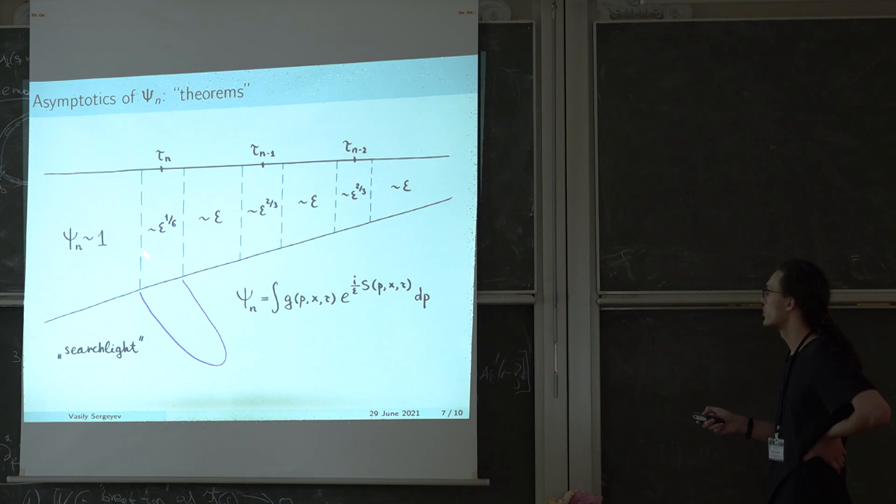Nearby the critical moment tau n, this solution becomes of the order of epsilon to the power one-sixth. And afterwards, it becomes even smaller of the order of epsilon. And from time to time, namely in the vicinity of the critical moments with lower indices, this solution becomes a little bit more noticeable again of the order of epsilon to the power of two-thirds.